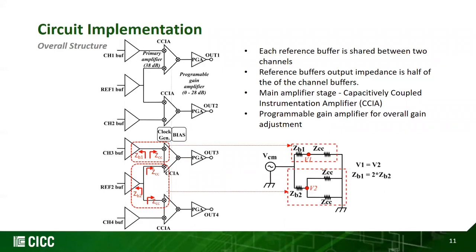As shown in the figure, our design includes four-channel analog front-ends with six electrodes. One reference electrode is shared between two channels, so six buffers total are needed for four channels. Since one buffer is shared between two channels, the impedance at the output of the reference buffer will be mismatched relative to the signal buffer, degrading the intrinsic CMRR. Therefore, the output stage of the reference buffer is optimized to balance the impedance mismatch at the shared node.